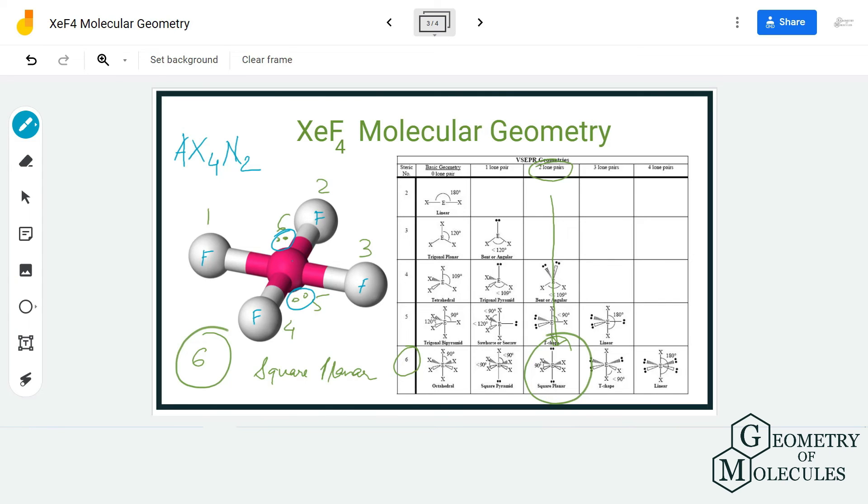Hence, the AXN notation will be AX4N2. You can also refer to that table and check if the answer is square planar. And yeah, the molecular geometry of XeF4 is square planar.